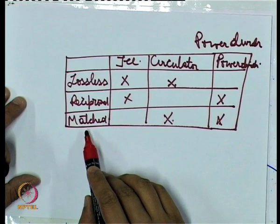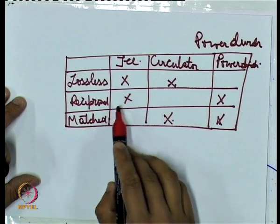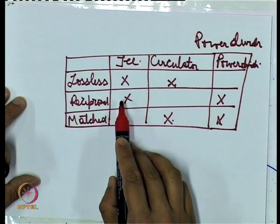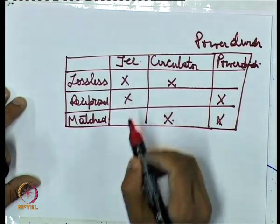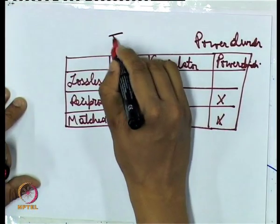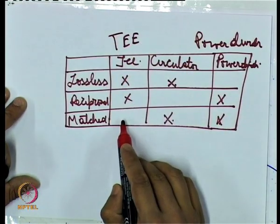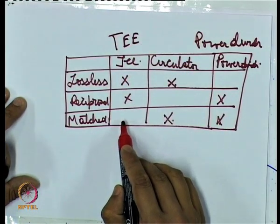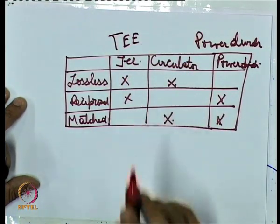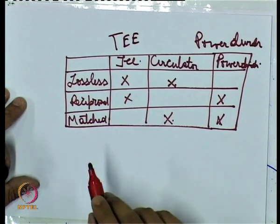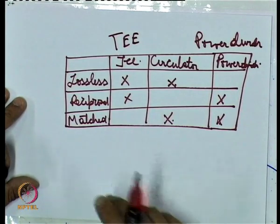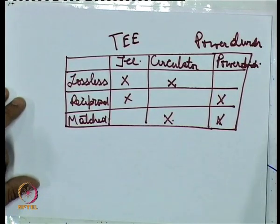Going back to the table, the T-junction device does not provide matching at all ports; however, it can be matched at a single port. So let us now discuss one by one all these devices.